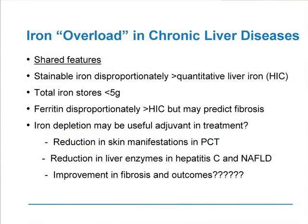The shared features we often see in individuals with other forms of chronic liver disease as to whether they have true iron overload often come down to the fact that stainable iron is disproportionately increased compared to quantitative iron as measured biochemically. Rarely do they have total iron stores more than five grams — more than five times the upper limit of normal — and as I showed in hereditary haemochromatosis, that is rarely associated with cirrhosis. The serum ferritin is disproportionately increased compared to liver iron concentration, though the ferritin level may be predictive of fibrosis. These questions have not yet been answered by any randomized controlled trials.